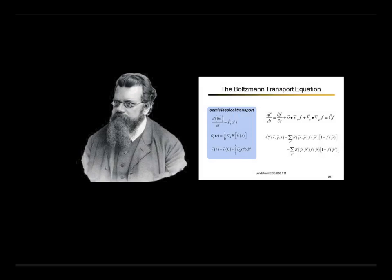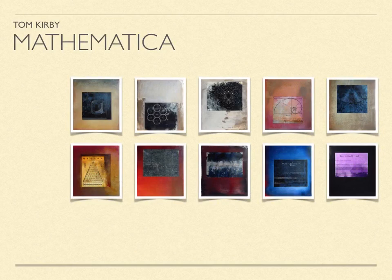Chris picked out some, like the Boltzmann transport equation, because it has a predictive sense for the future — it's a very significant equation for nanotechnology, which he feels will be significant in the future. Some selections are more personal. They're all in an abstract art context, because it's part of my idea that truth and beauty are in a profound alliance — two sides of the same coin.